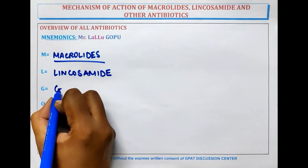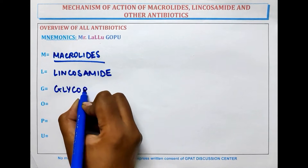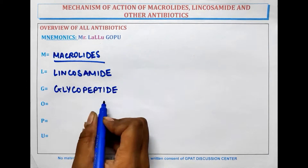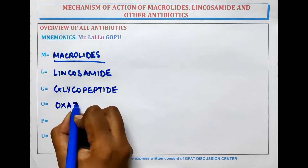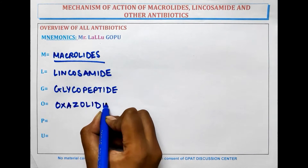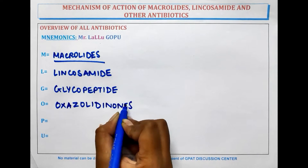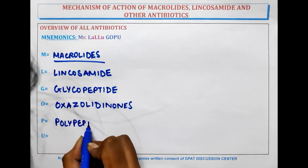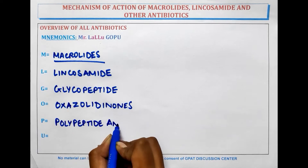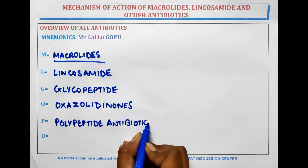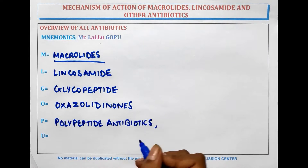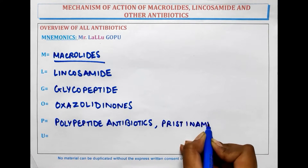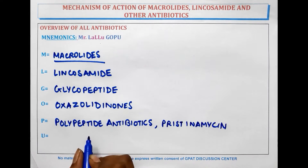G is for Glycopeptide. O is for Oxazolidinone. P is for Polypeptide antibiotics. And the next letters cover Pristinomycin and U for Urinary antibiotics.